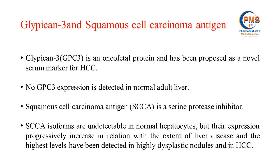Glypican-3 and squamous cell carcinoma antigen are novel markers for HCC. Glypican-3 is an oncofetal protein and has been proposed as a novel serum marker for hepatocellular carcinoma. No Glypican-3 expression is detected in normal adult liver. Squamous cell carcinoma antigen is a serine protease inhibitor, normally undetectable in normal hepatocytes, but its expression progressively increases in relation to the extent of liver disease, with the highest level detected in highly dysplastic nodules and in hepatocellular carcinoma.